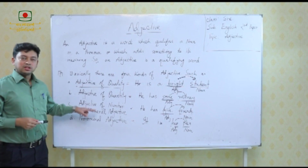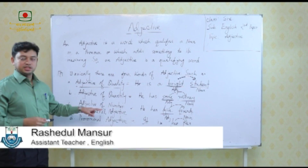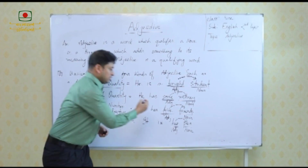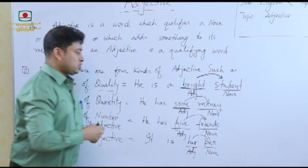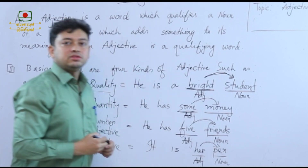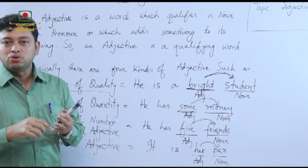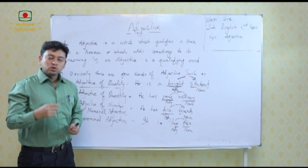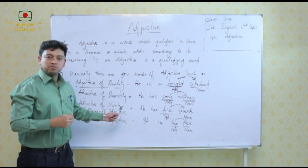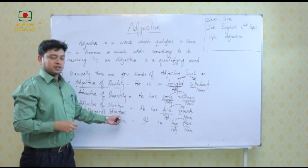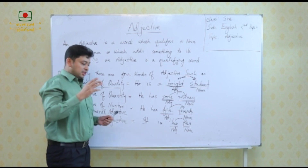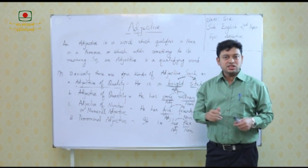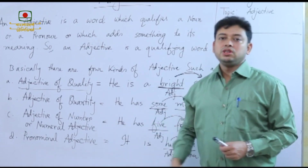The third one is adjective of number, or numeral adjective. For example: He has five friends. The word 'five' is an adjective because it is qualifying the noun 'friends'. We can count the friends: one, two, three, four, five. As we can count the number, that is why the name is adjective of number. You can also call it numeral adjective — both answers are correct.